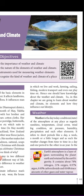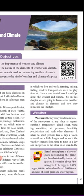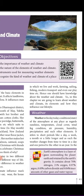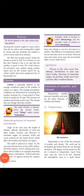Weather is the day-to-day conditions of the atmosphere at any place, as regards sunshine, temperature, cloud cover, wind, fog condition, air pressure, humidity, precipitation, and such other elements. It refers to short periods like a day, a week, a month, or a little longer. Suddenly there can be a change — it may start to rain or give more sunlight. These are the changes in the weather.